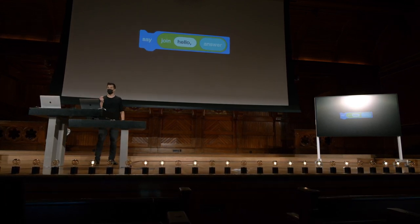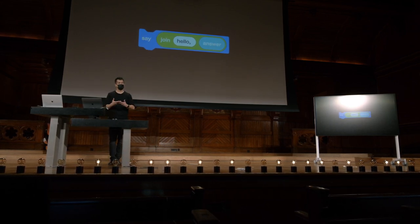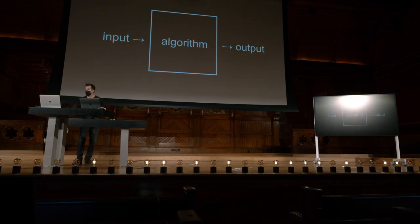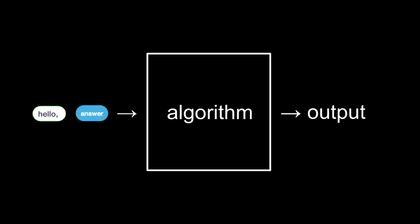A saída do Join, presumivelmente, será Hello, David, ou Hello, Carter, ou o que quer que seja. Esse valor de saída está essencialmente se tornando a entrada para outra função, Say, apenas porque nós empilhamos ou aninhamos coisas umas sobre as outras. Metodicamente, é realmente a mesma ideia. A entrada agora são duas coisas: Hello, vírgula, e o valor de retorno da função Ask anterior.